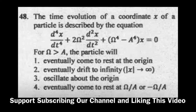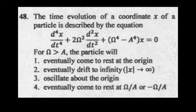For ω greater than a, the options are: the particle will eventually come to rest at the origin; eventually drift to infinity; oscillate about the origin and eventually come to rest at some point. One has to first understand what these options mean. 'Eventually come to rest at the origin' means when t tends to infinity, x should go to 0. 'Eventually drift to infinity' means mod x tends to infinity as t tends to infinity. 'Oscillate about the origin' means x has both positive and negative values but does not go beyond some bound — it oscillates between them.